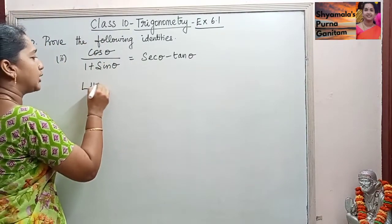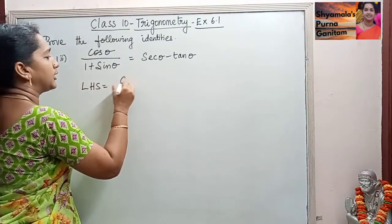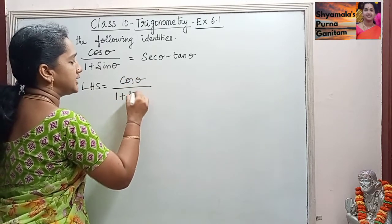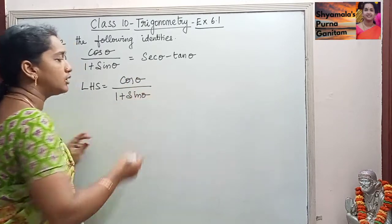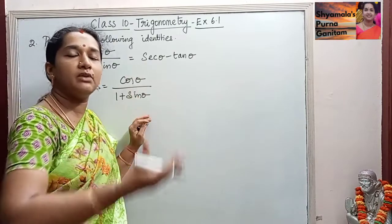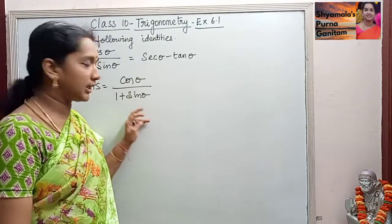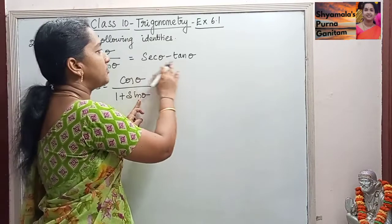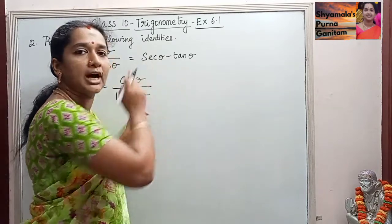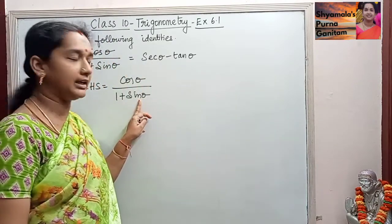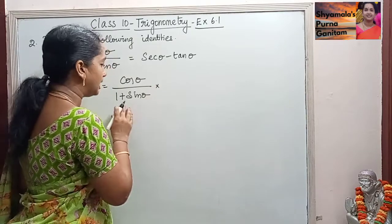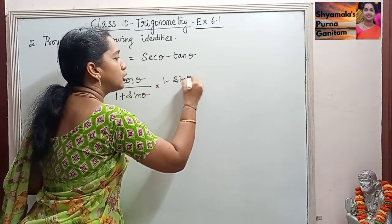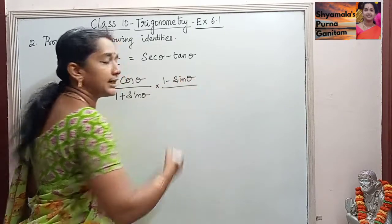We will take LHS here. LHS is equal to cos theta by 1 plus sine theta. For this sum, we are going to prove it a different way. In the denominator, we are having 1 plus sine theta, and we need to prove the RHS as secant theta minus tan theta. So we are going to multiply 1 minus sine theta to the numerator and the denominator.